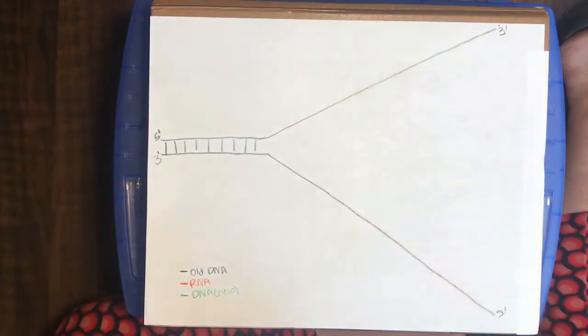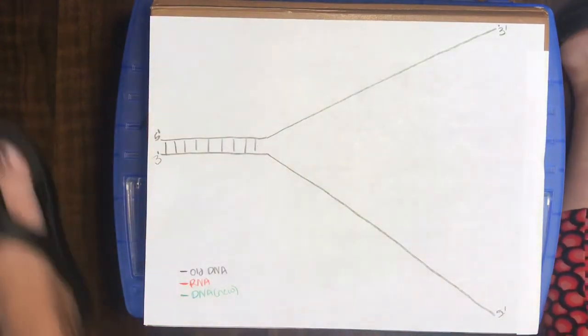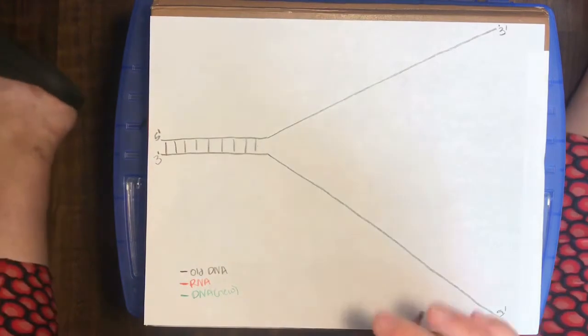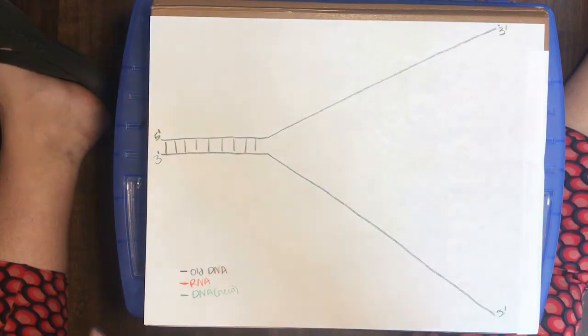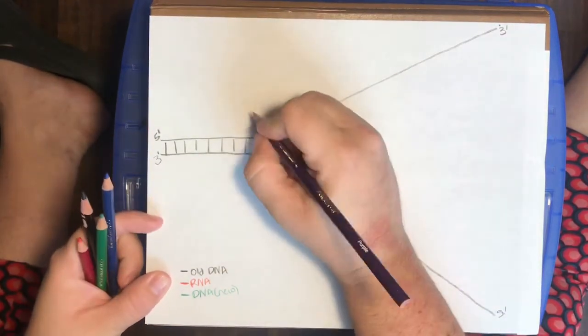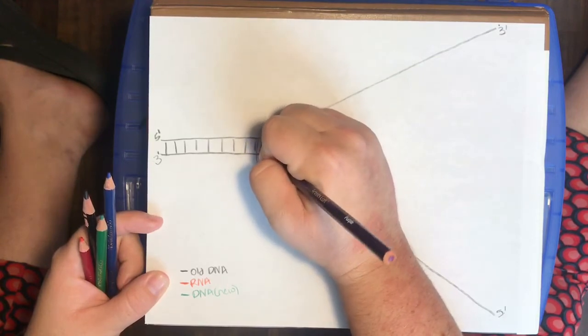And so we've unwound this DNA, and the reason that happens is because of an enzyme that is called helicase. Our enzymes are going to be drawn in a purple color. So helicase, we're going to draw as sort of this donut that happens here.